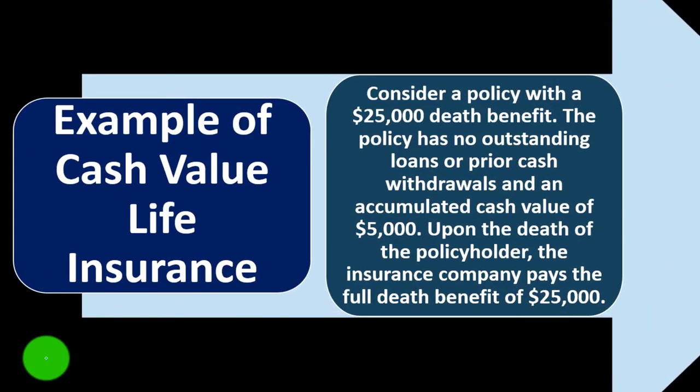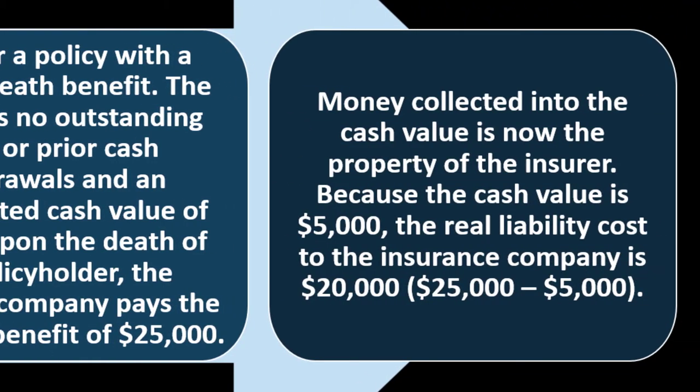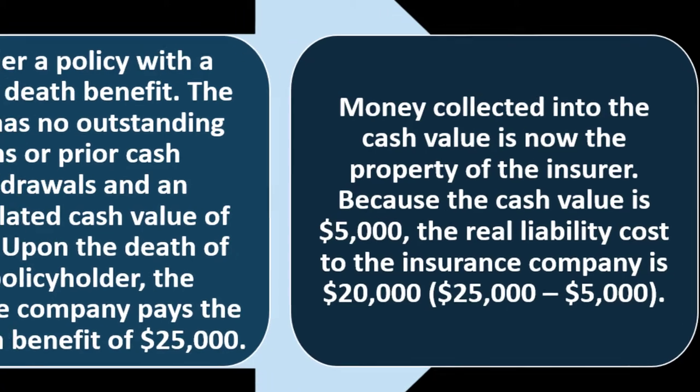Consider a policy with a $25,000 death benefit — meaning $25,000 is paid out to the beneficiary at death. The policy has no outstanding loans or prior cash withdrawals and an accumulated cash value of $5,000. Upon the death of the policyholder, the insurance company pays the full death benefit of $25,000. However, the cash value of $5,000 becomes the property of the insurer, making the real liability cost to the insurer only $20,000.